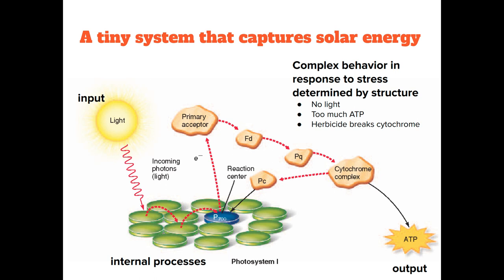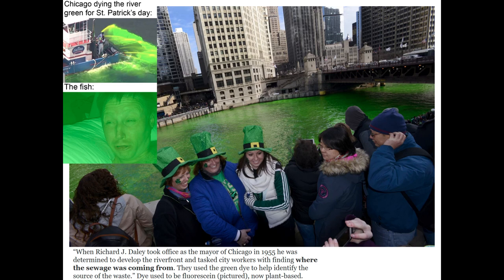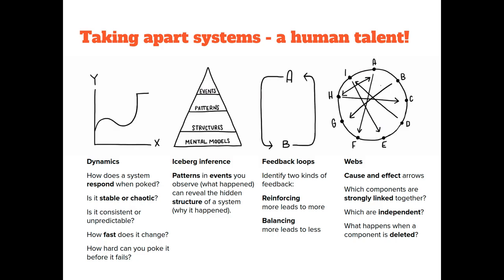So the next question is: how do we determine a system's structure from disconnected data points? That really boils down to breaking the system or taking it apart. We're going to use the Chicago River as an example. The first tool you can use to investigate a system are its dynamics — how its inputs, outputs, and internal pools change over time. If you disturb a system with some stressor, how does it respond? Does the system return to a stable baseline or move in unpredictable ways to a new state?